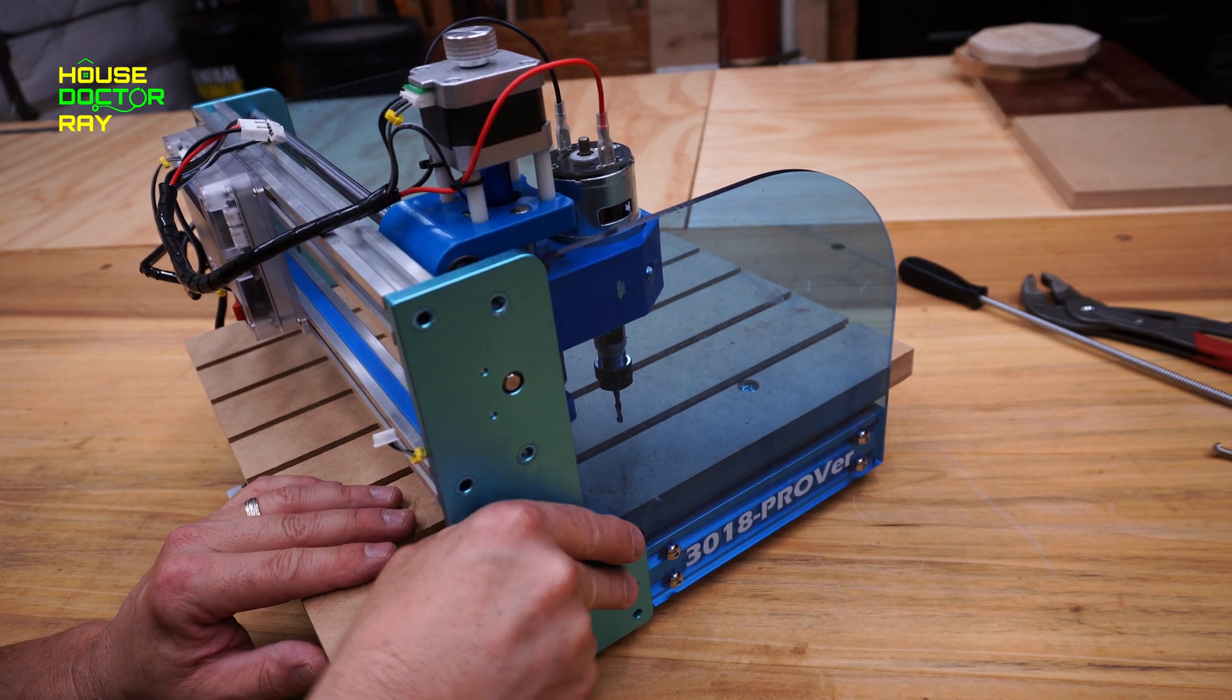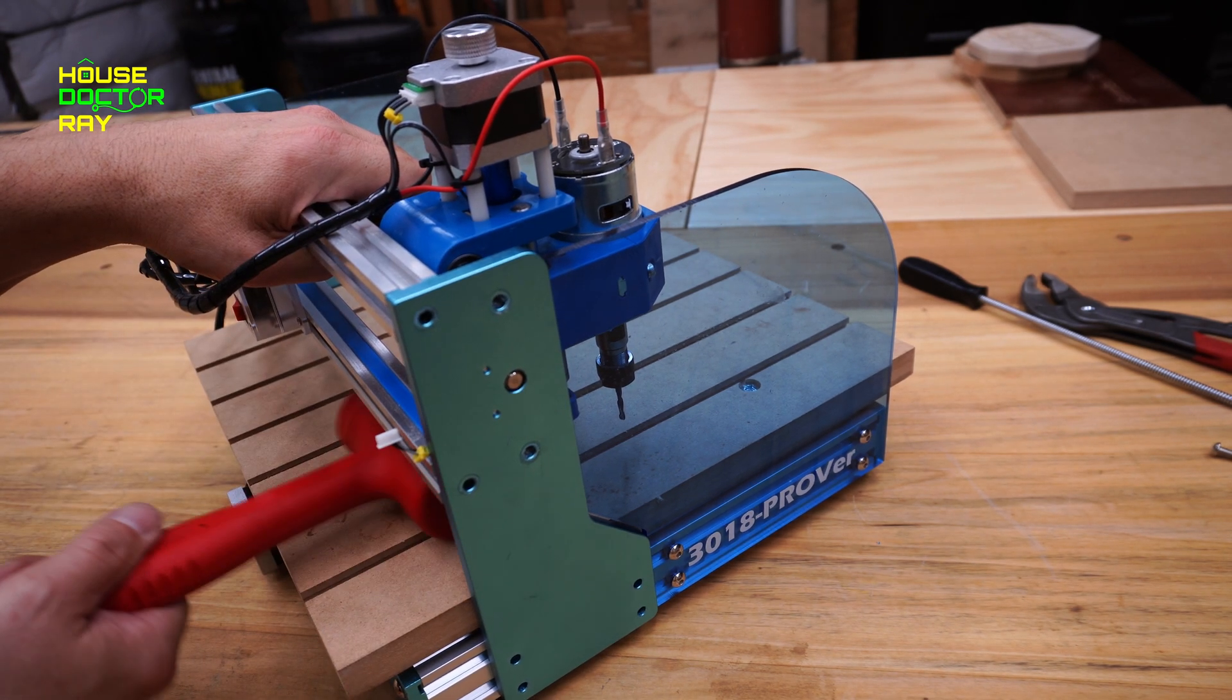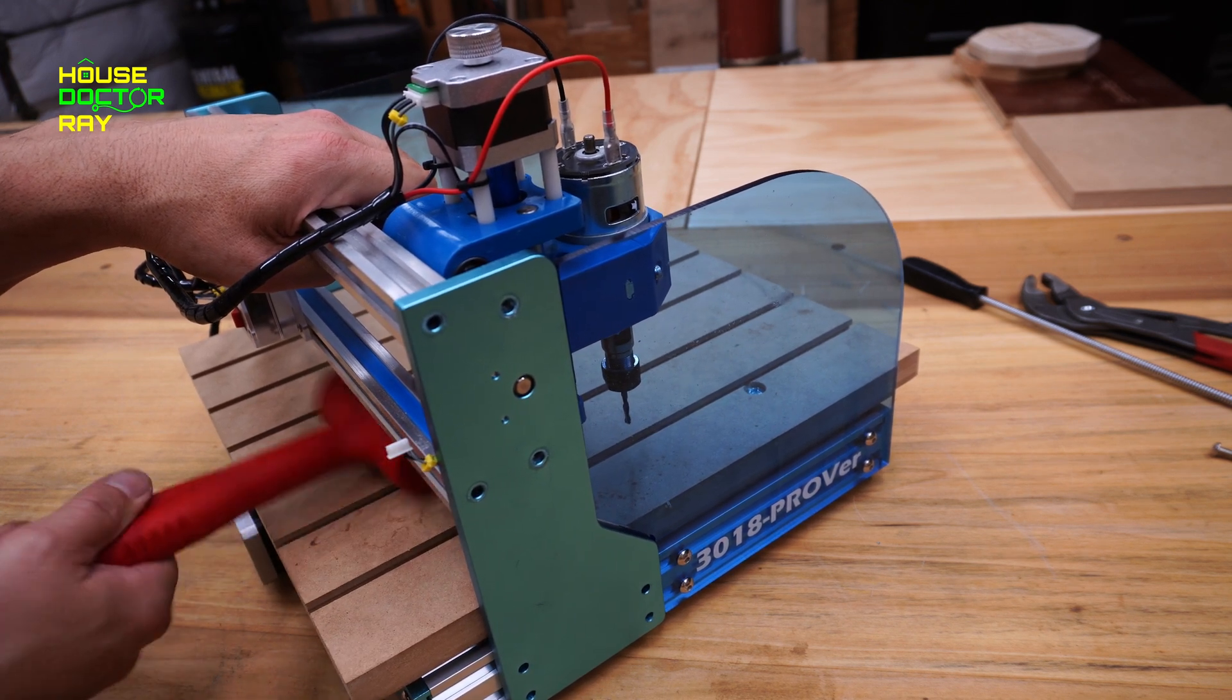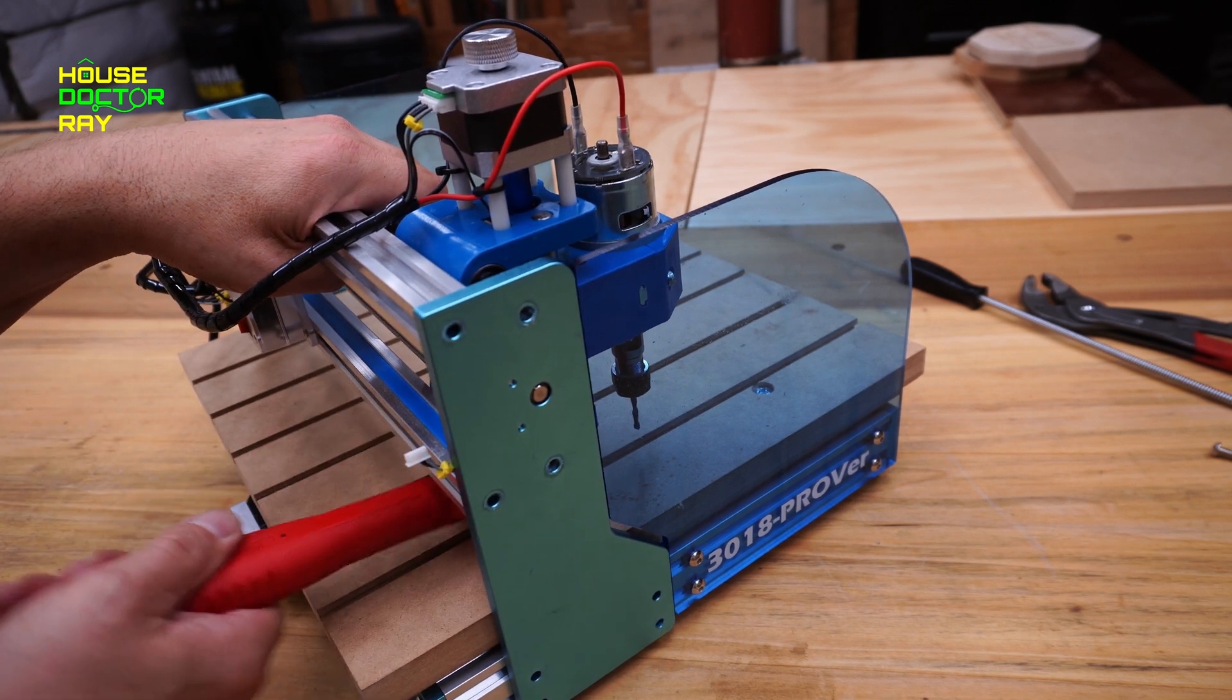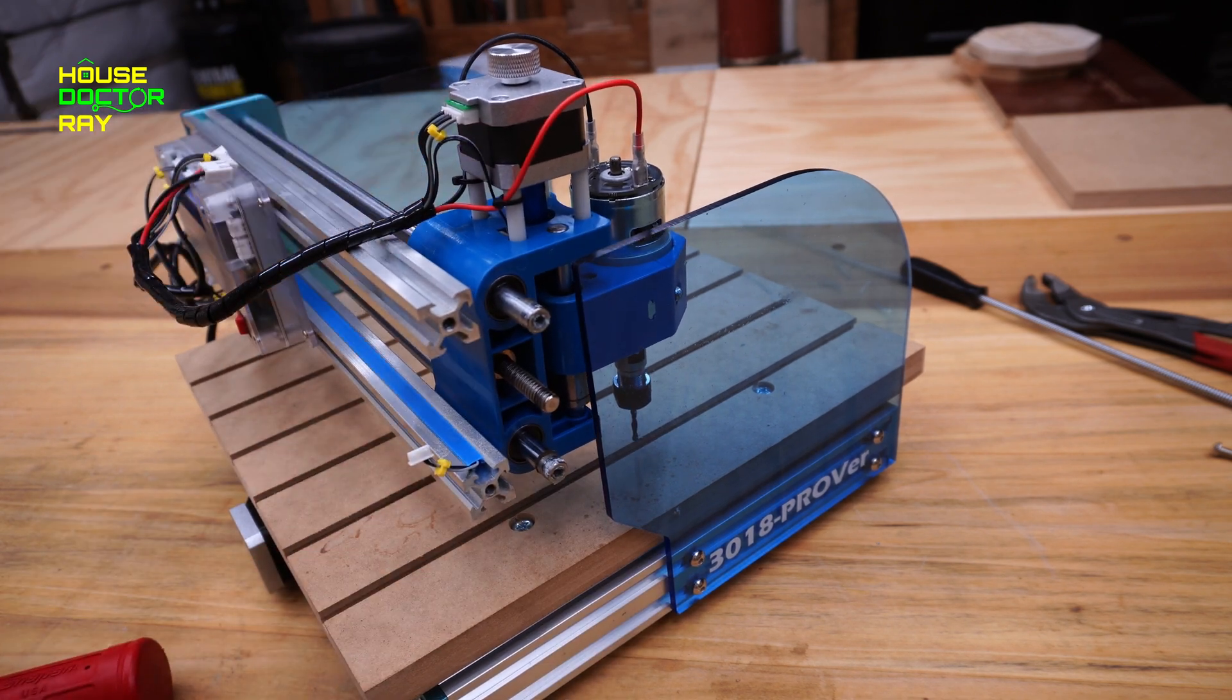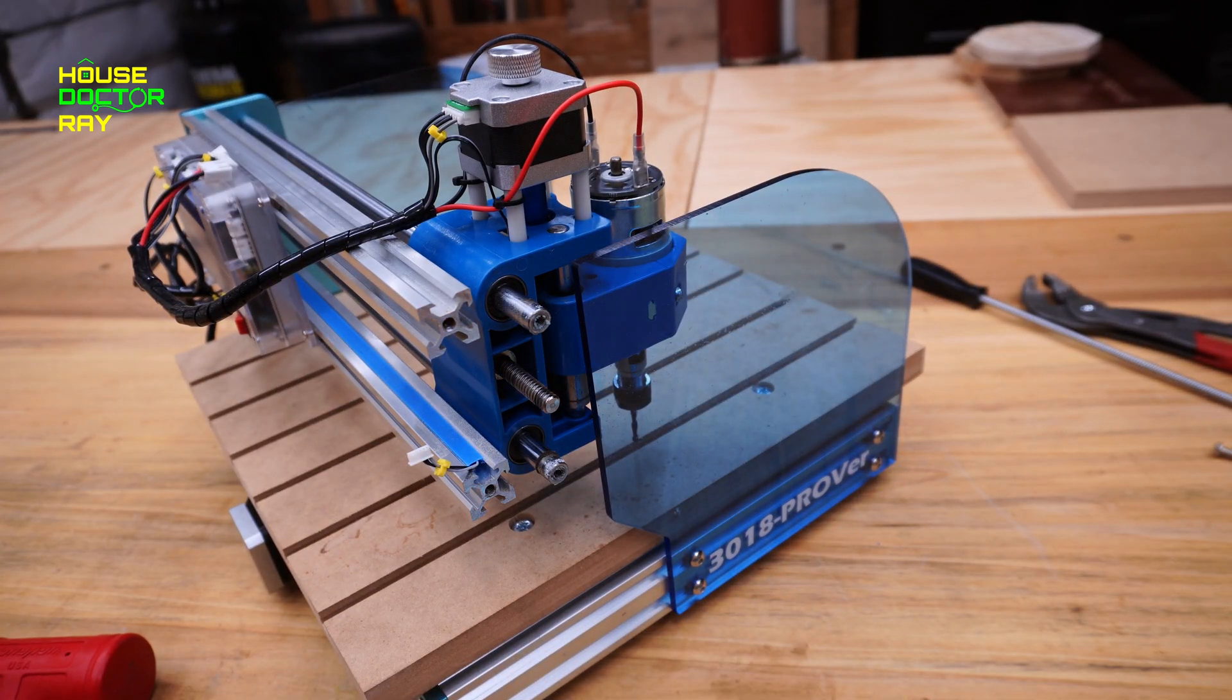Now hopefully this piece right here will just come right off. Maybe not. I have to persuade it a little bit. Looks like there was some kind of adhesive in these pockets for these shafts, but it didn't take much to get it apart.